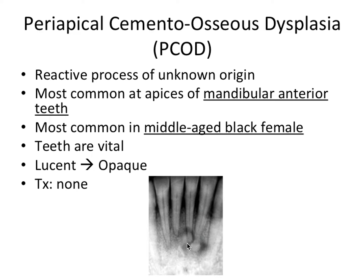The teeth, even though they may look like the pulps are necrotic — because why are there lesions centered around the apex? You'd think it's some sort of infection. But this is actually a reactive process of unknown origin, and the teeth, if you were to test them, are actually vital. That's a really important fact to differentiate something that may look like an endodontic or periodontal infection but is actually just PCOD.